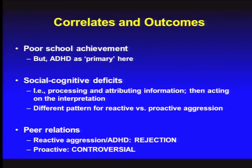School achievement is a big issue. Cognitive social processing and peer relationships also matter. Kids with ADHD get rejected; kids with ADHD who also have ODD tend to be explosive and reactive at the least provocation — those are the most rejected kids of all. But if you're proactive in your aggression — planful, a bully who decides when to mete out punishment — you tend to be sociometrically controversial: some kids admire you as a leader, others are scared of you, and others are too afraid to say they dislike you.